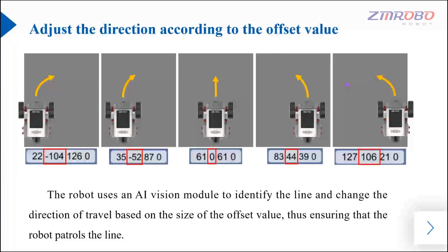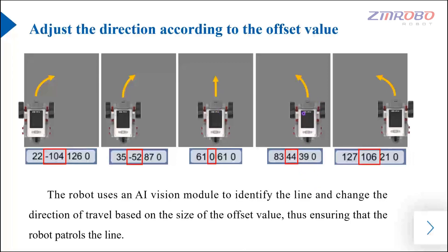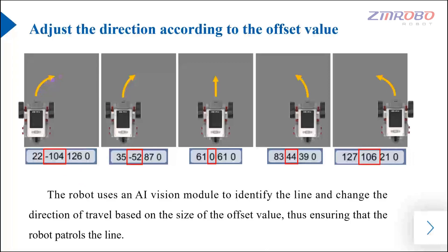By using the change rule of the offset value, the robot can realize the function of visual line patrol. For example, when the offset value is zero, the robot moves straight forward. When the offset value is 44, the robot makes a small turn to the left. When the offset value is 106, the robot makes a large turn to the left. When the offset value is minus 52, the robot makes a small turn to the right. When the offset value is minus 104, the robot makes a large turn to the right.